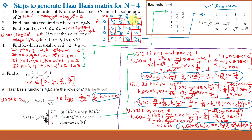Now we find the element values of the 4 by 4 matrix. Step 6 part 1: for row k equal to 0, where p equals 0 and q equals 0, H0 of z equals 1 upon root N for all values of z. That is 1 upon root 4, which equals 1 upon 2. So for k equal to 0, all four column values are 1/2, 1/2, 1/2, and 1/2.